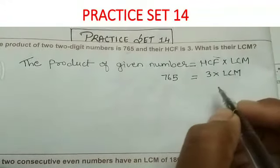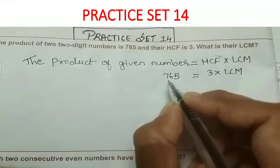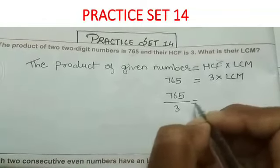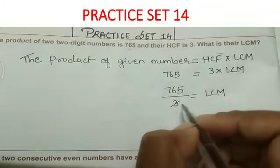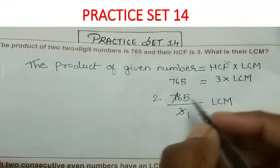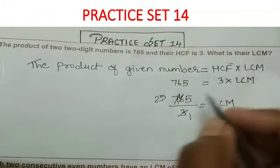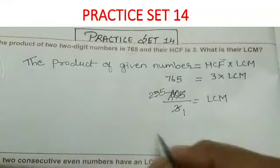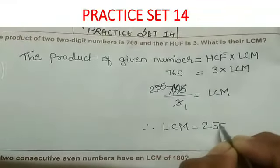Now for the calculation, we take 3 to the left-hand side, so multiplication becomes division, and LCM remains on the right-hand side. So we divide: 765 divided by 3. 3 ones are 3, 3 twos are 6, carry 1 with 6 gives 16, 3 fives are 15, carry 1 with 5 gives 15, 3 fives are 15. So here your LCM will be 255.